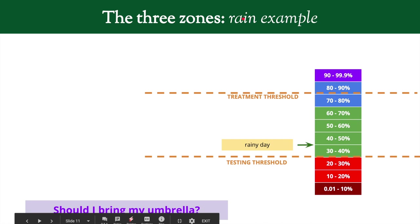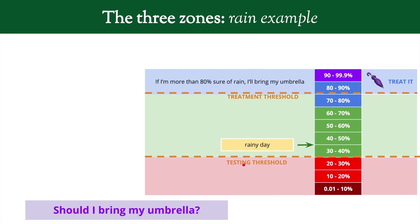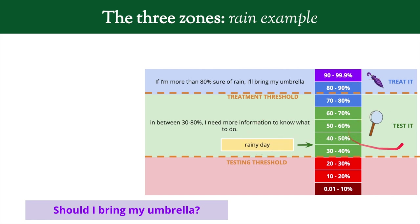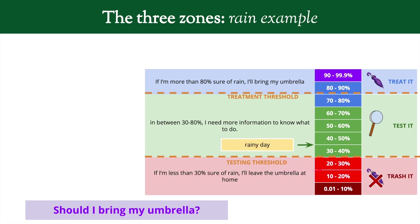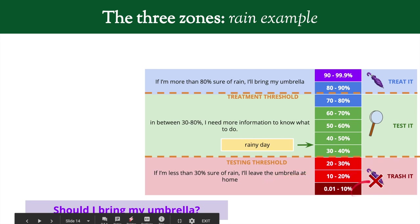We set treatment and testing thresholds. The treatment here is bringing the umbrella — if we think a rainy day is likely, we bring it so we don't get wet. If we're unsure and in the test zone, we need more information to decide. We don't know whether to bring the umbrella or leave it at home, so we need to gather more information.